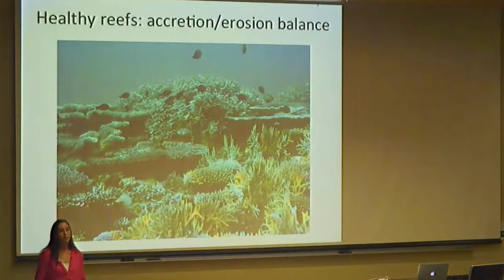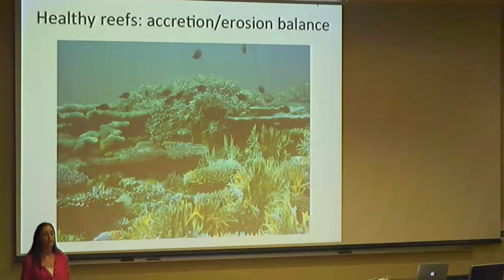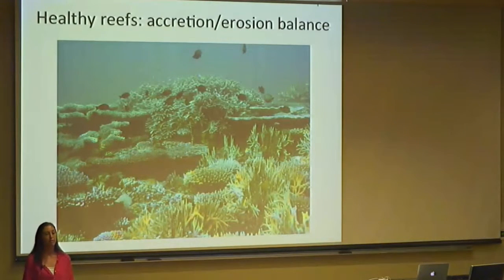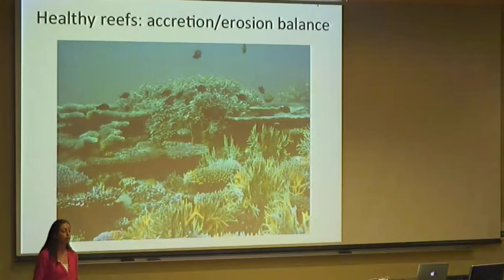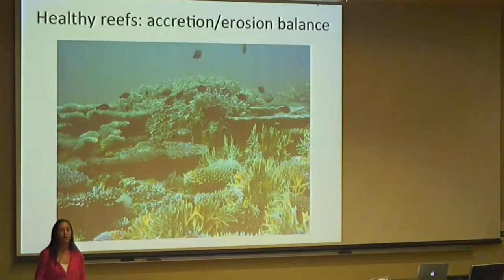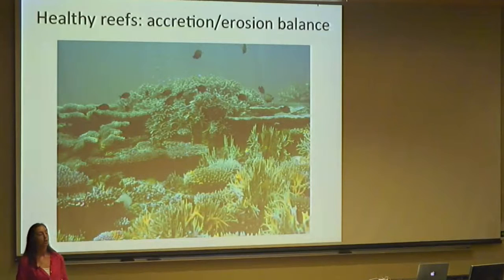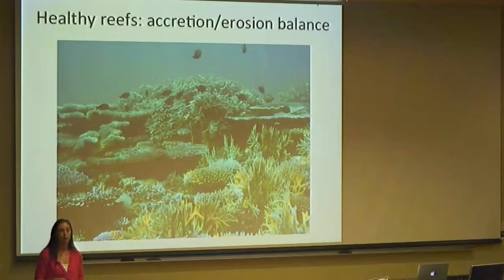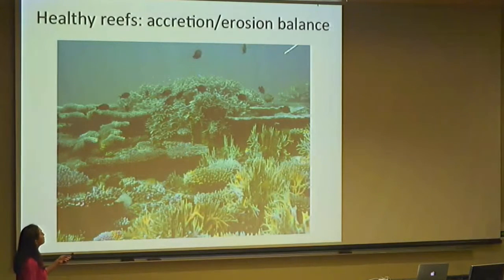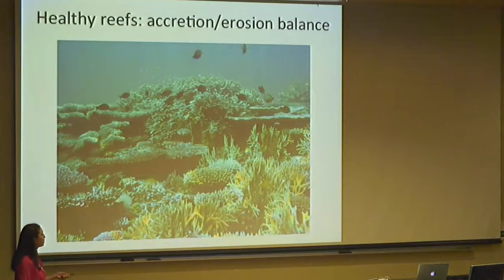In a healthy reef, there are two processes: accretion and erosion, and usually they're balanced. Organisms like corals and bivalves are constantly creating big physical 3D structures by accreting calcium carbonate — they make these reefs. But there are other organisms, like sponges and some bivalves, that dissolve calcium carbonate, so they're constantly in competition. On a healthy reef, you see a nice balance and get a really complex 3D structure with lots of nooks and crannies — lots of places for critters to hide and live.